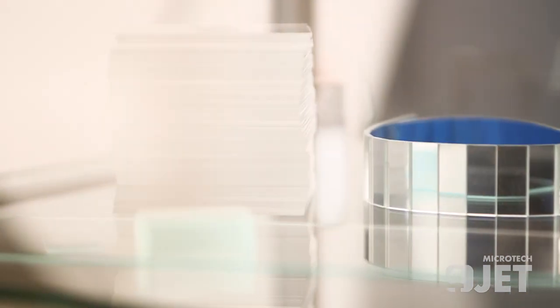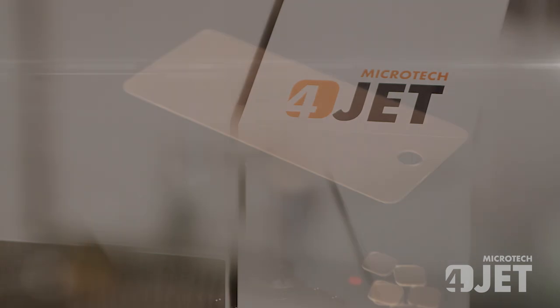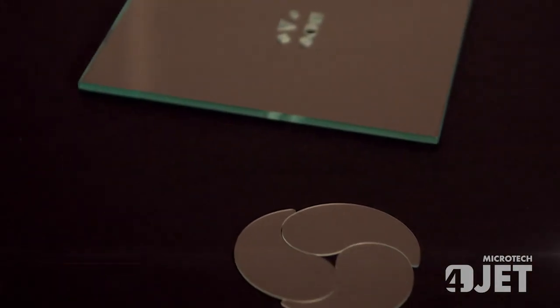The Pearl Cut process is suitable for soda lime, borosilicate, and strengthened display glass, as well as ultra-thin glass films, solar glass, and sapphire.